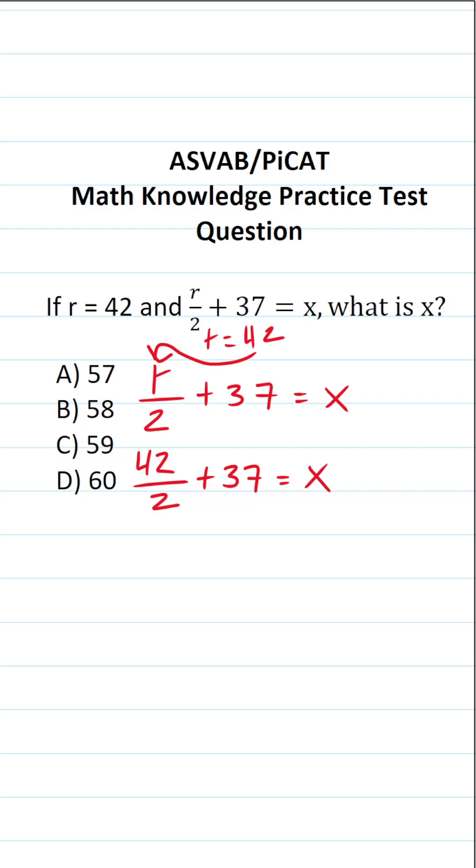Let's take care of 42 divided by 2. You should be able to do this part mentally. 4 divided by 2 is 2, 2 divided by 2 is 1. So this becomes 21 plus 37 equals x.